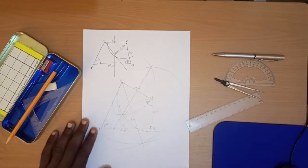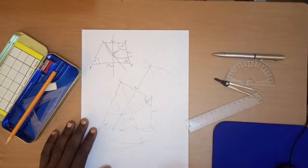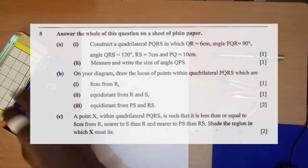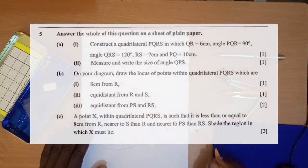Construction is coming up well. Let's go to question 5C. Question 5C says: A point X within the quadrilateral PQRS is such that it is less than or equal to 8 centimeters from R, nearer to S than R, and nearer to PS than RS. Shade the region in which X must lie.